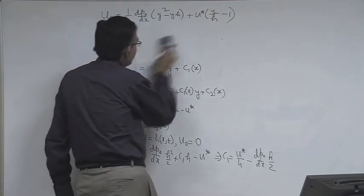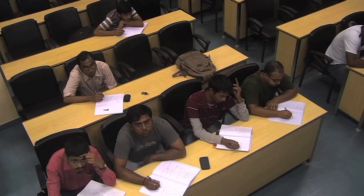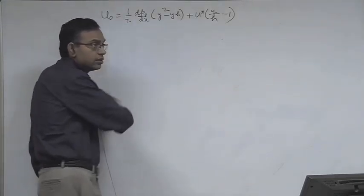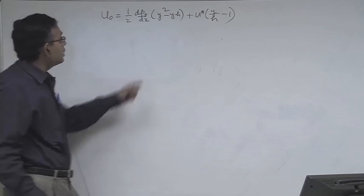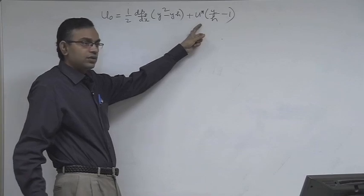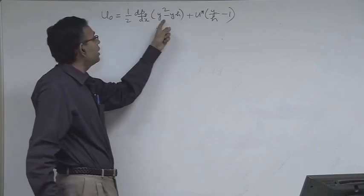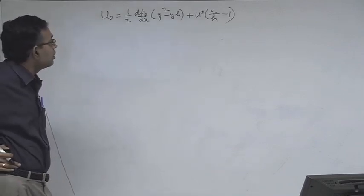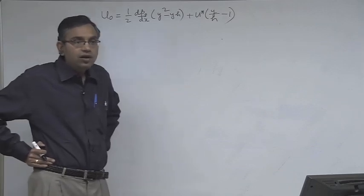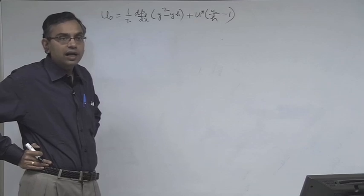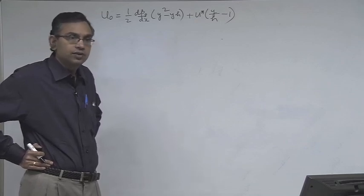It is always a good practice to check that the boundary conditions are satisfied by the solution. At y equals 0, u0 equals minus u*, and at y equals h, both terms are 0 so u0 equals 0 — confirmed. To get v0, we use the continuity equation: del u0/del x plus del v0/del y equals 0 at leading order. We then differentiate u0 with respect to x, remembering that both p0 and h are functions of x, and this equals minus del v0/del y from the continuity equation.